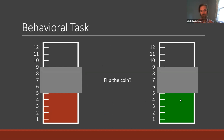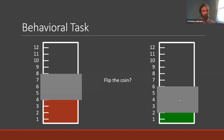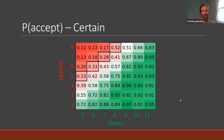We gave people these certain choices, then essentially the same choices but with curtains covering the value thermometers. Now the loss is somewhere between five and nine, with no further information about which specific value applies — and the same on the gain side. The occluders were in exactly the same position on the left and right. We had corresponding trials from the design matrix for both certain and uncertain conditions.